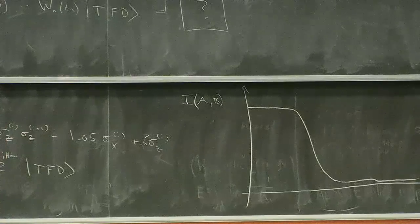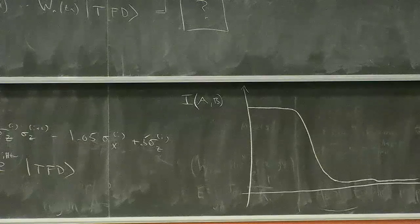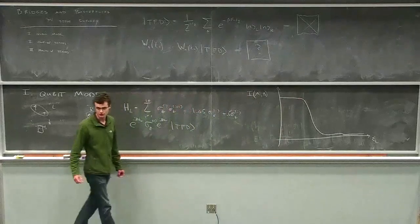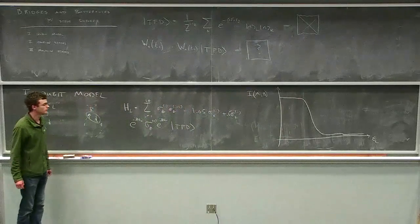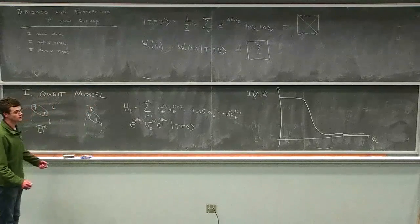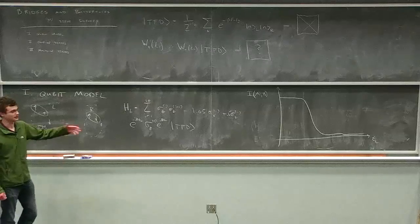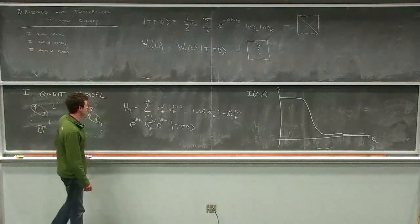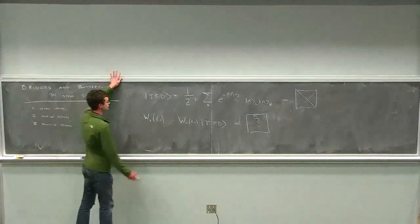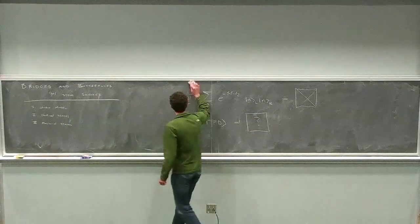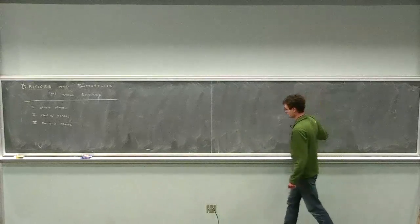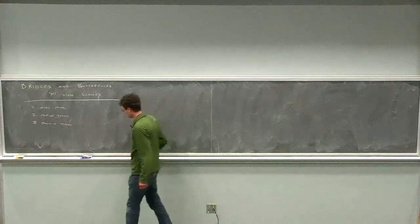T_w doesn't label the time of the state; it labels the time at which the perturbation was made. We plot the mutual information between subsystems A and B as a function of T_w. It starts off near maximal, then decreases rather sharply to a floor value that depends inversely on the size of the system. Site 5 is on the other side of the chain, which is why it takes some time for the perturbation to propagate across. This is the basic butterfly effect: a small perturbation long in the past dramatically changes the two-sided entanglement and therefore changes the bridge connecting the two.